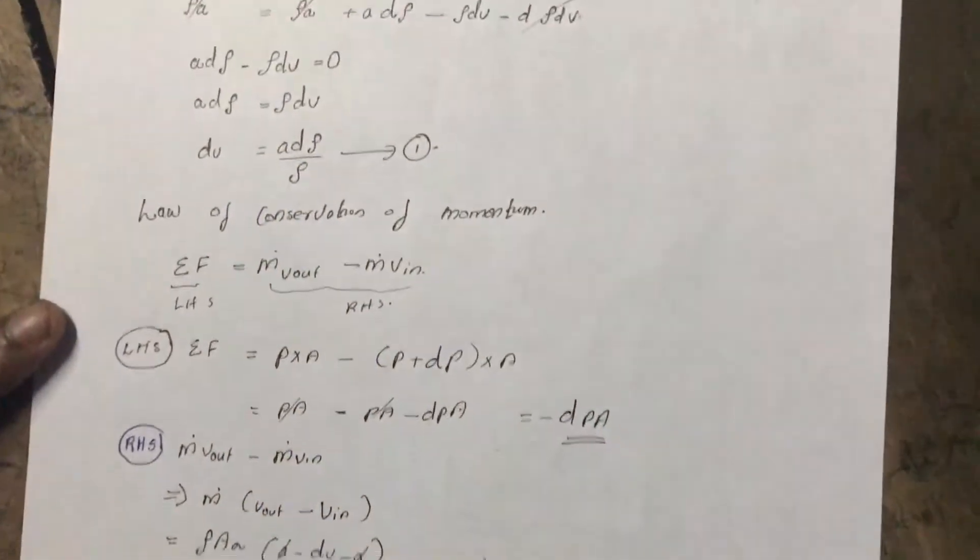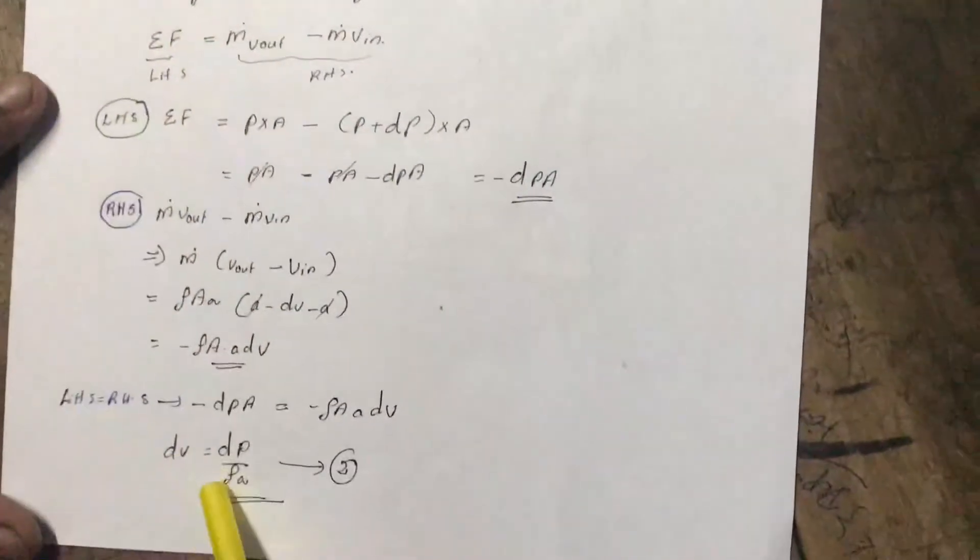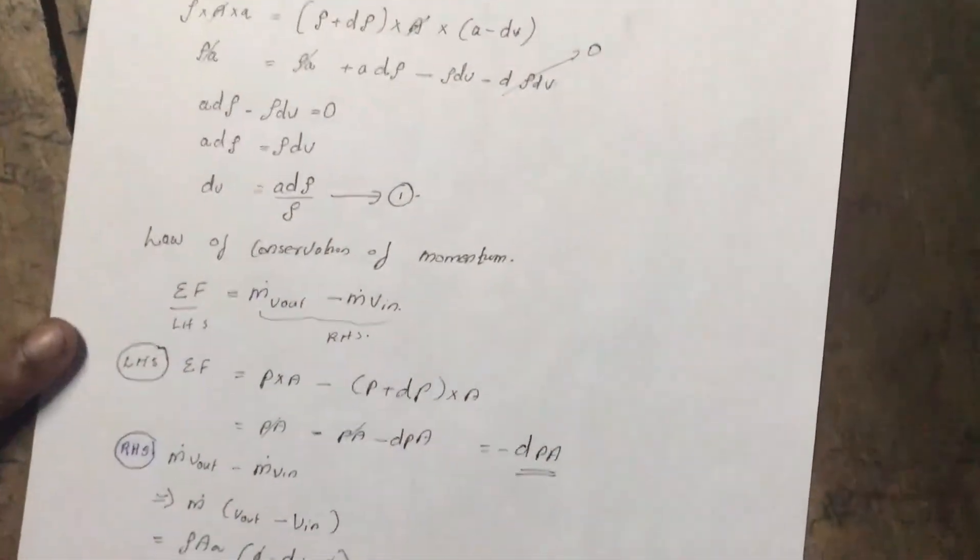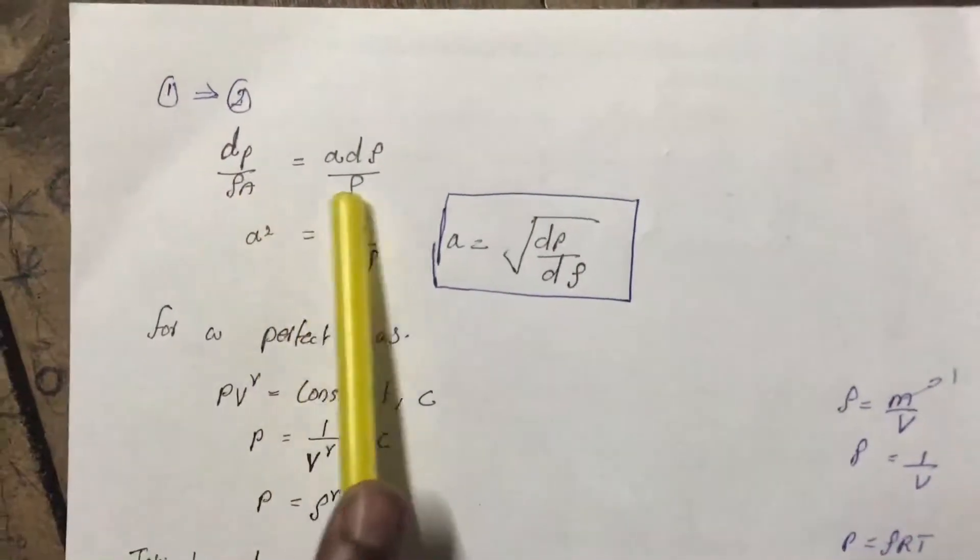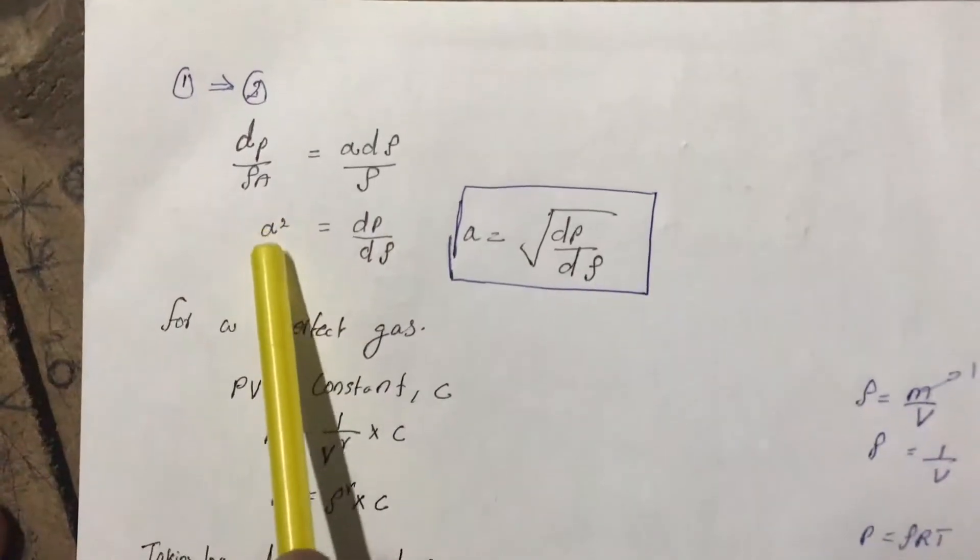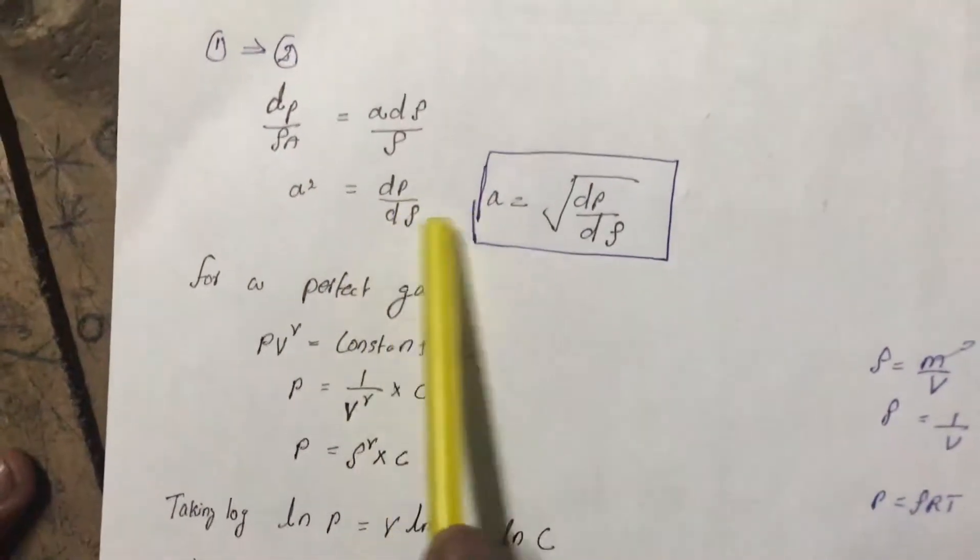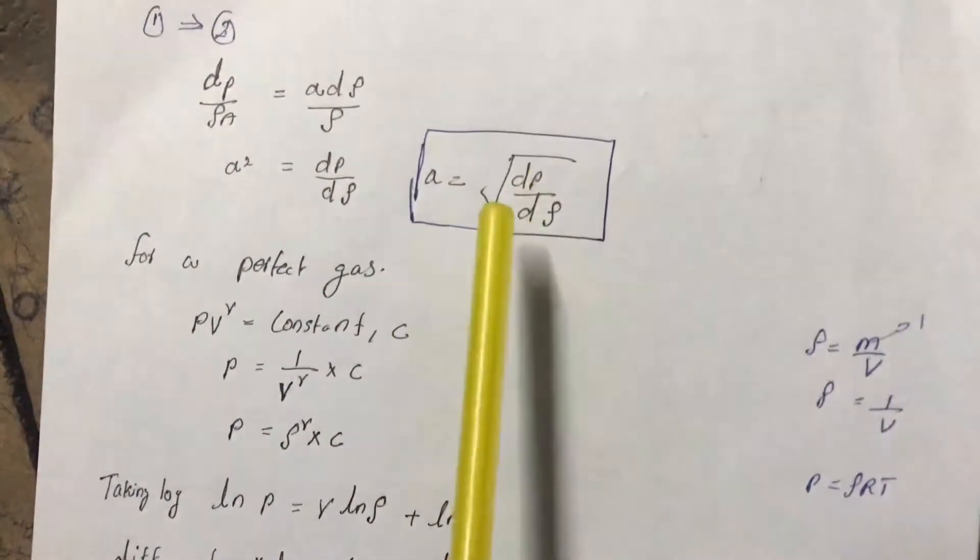Equating these two terms, equation 1 and equation 2, that is the dv is the same. So in these two right-hand side terms, we can get an expression as dp by rho a equal to a d rho by rho. And we can get it as a squared is equal to dp by d rho, or a is equal to root of dp by d rho.